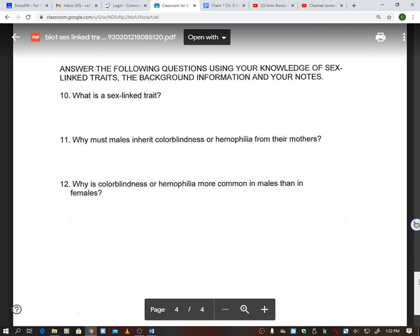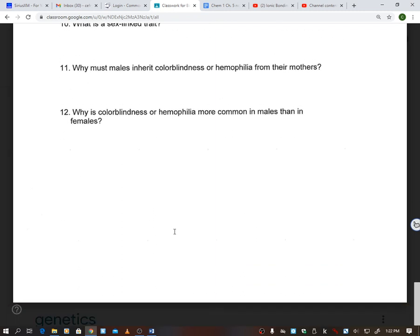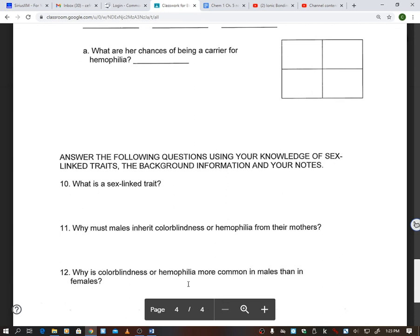So then after that, I want you guys to answer these following questions using the knowledge of what we just talked about. What is a sex-linked trait? Why must males inherit colorblindness or hemophilia from their mothers? You can draw. If it helps you instead of just writing, you can draw out and show why. And then why is colorblindness or hemophilia more common in males than in females? Once again, you can draw a Punnett square or just write it out. If you guys have any questions at all, or if you're having any trouble understanding this, please get a hold of me, and I will try to get in touch with you and explain things a little bit better. Let me know if you need anything. Have a great rest of your day. Bye.